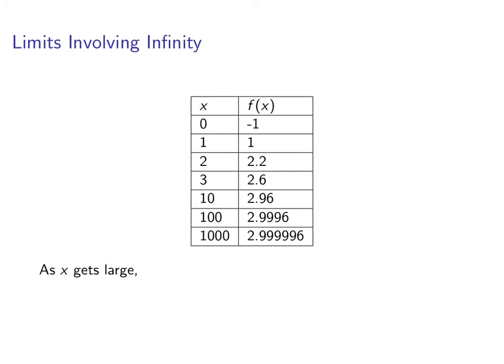It looks like from the table that as x is getting large, f of x is approaching 3. You can see we've put in a pretty big number for x and the corresponding f of x value is pretty close to 3 and getting closer.